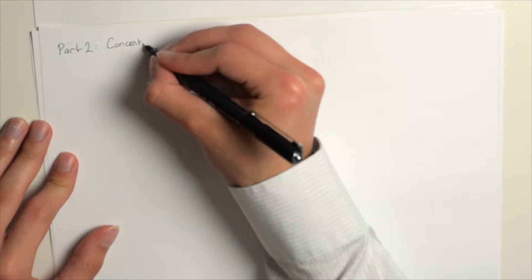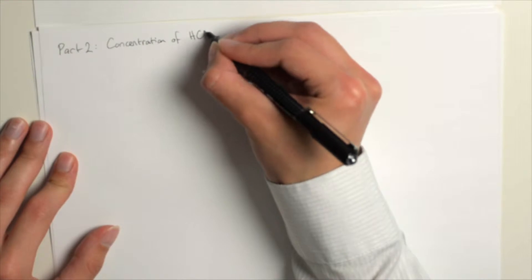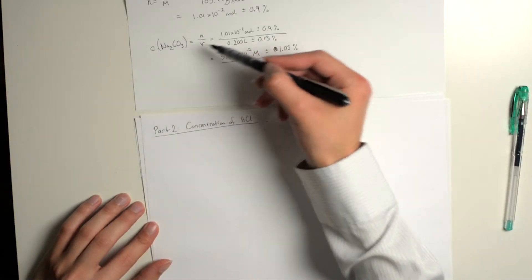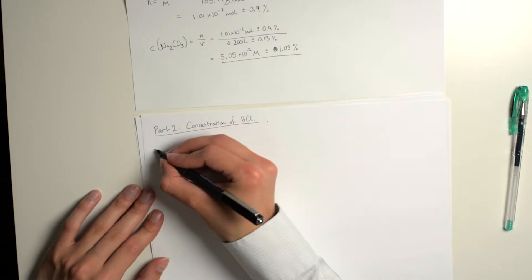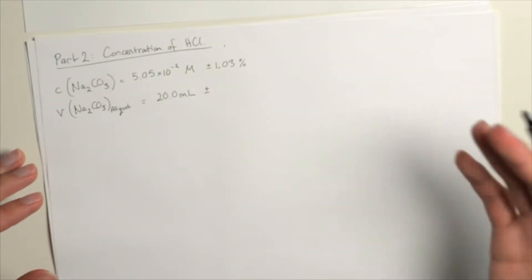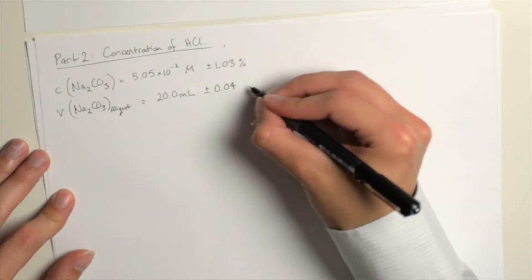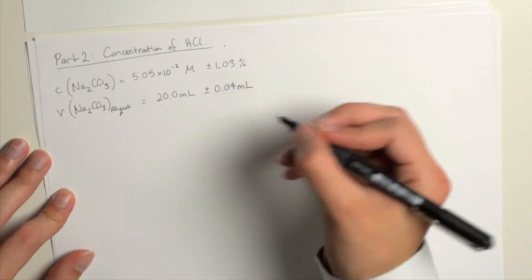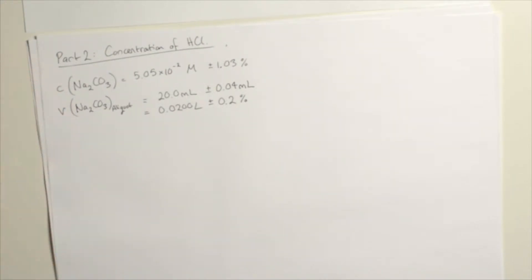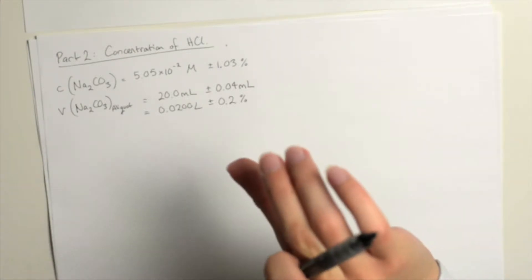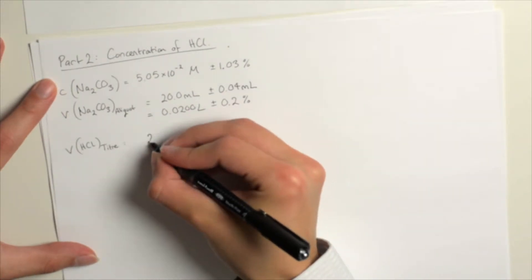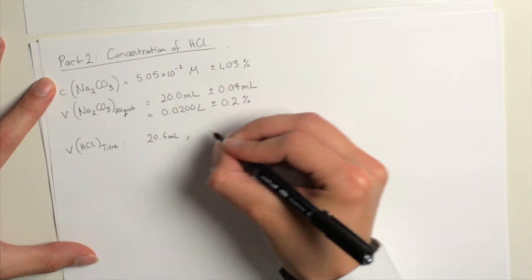For the next part we had to calculate the concentration of the hydrochloric acid. The bottle didn't tell you the concentration on the front, so we had to titrate it. I'm going to take the concentration of sodium carbonate and list everything I have. I made sure to have exactly 20 milliliters of this stock solution, which had an absolute uncertainty of 0.04 milliliters — we need to convert this into relative uncertainty. I have the concentration of the aliquot, the volume of the aliquot, and the volume of hydrochloric acid needed to neutralize it — this is called the titer. We need to find the average titer because we did this titration about three times until we were within 0.1 of a milliliter in our results.